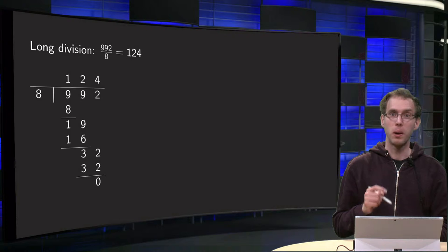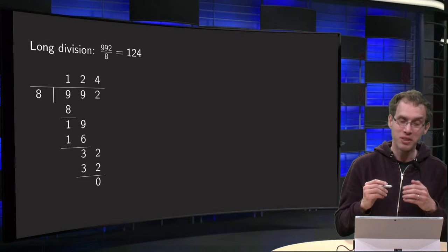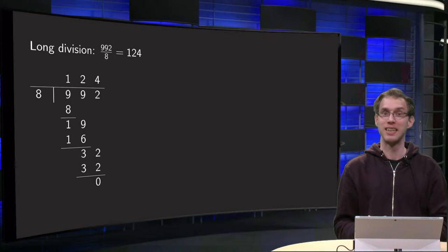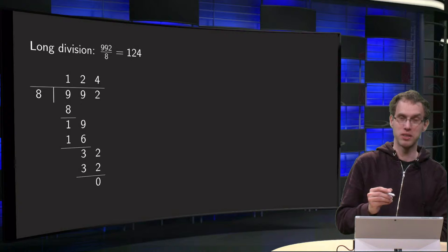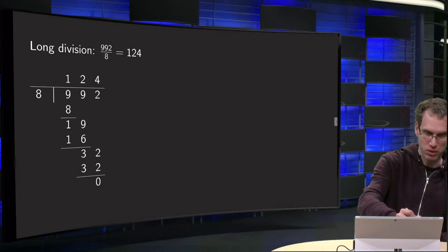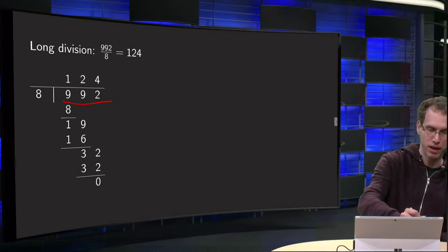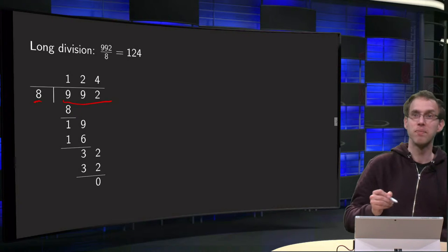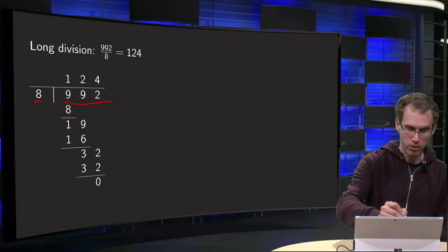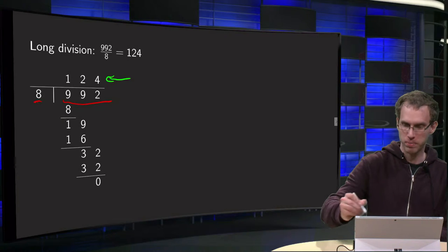Suppose you want to compute 992 divided by 8. We write 992 over here and we divide it by 8, and the result of the division will come here on top.